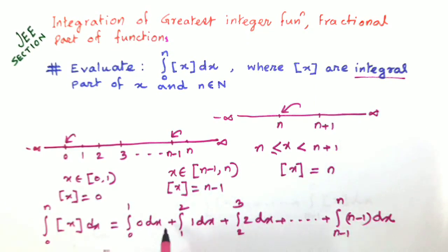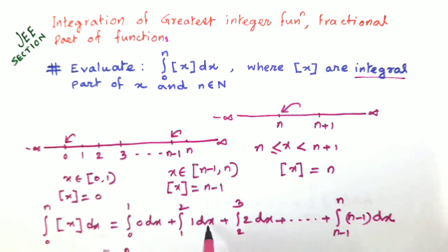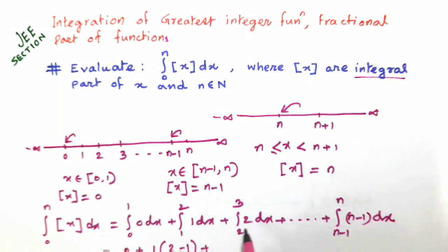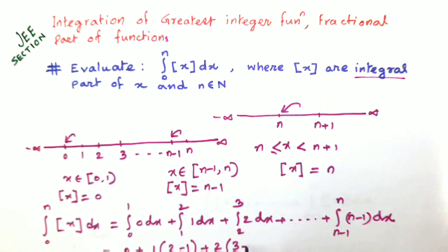We know the integration of dx is x. Since the first piece has coefficient 0, it equals zero. For 1 dx with limit 1 to 2, it gives 1 times (2 minus 1). For 2 dx with limit 2 to 3, it gives 2 times (3 minus 2). Continuing, the last term gives (n minus 1) times (n minus the lower limit n minus 1).